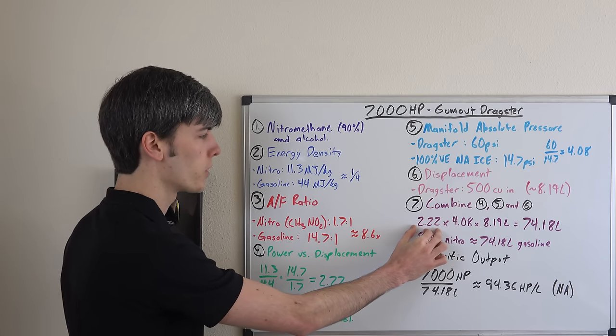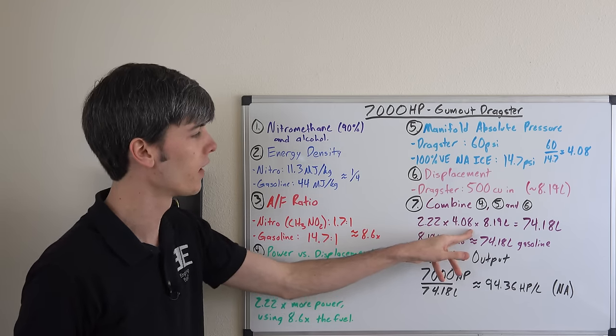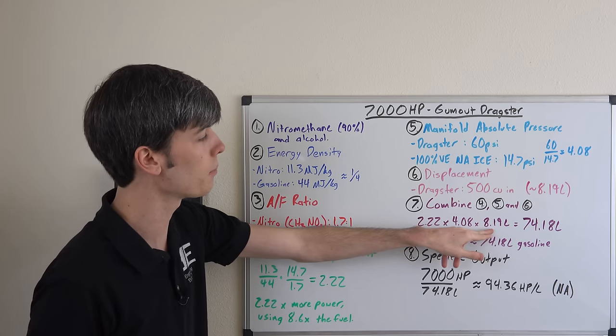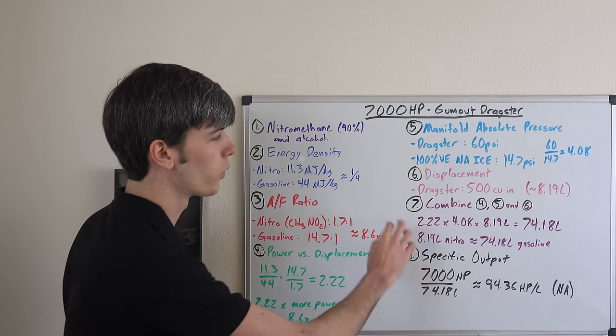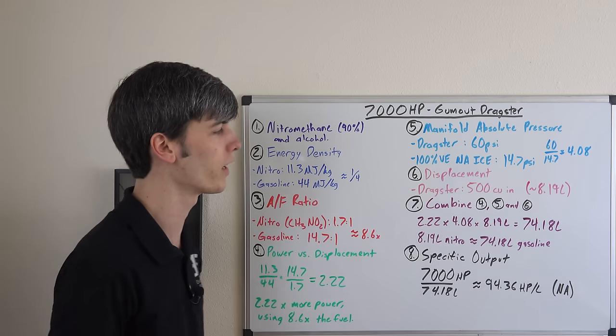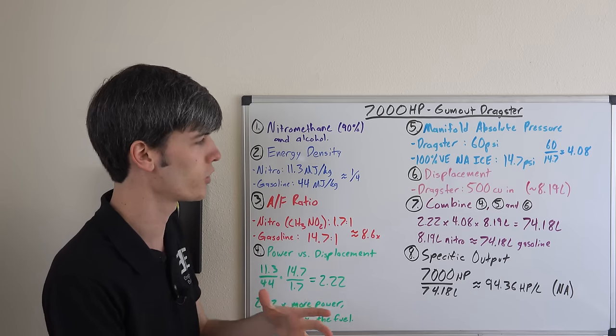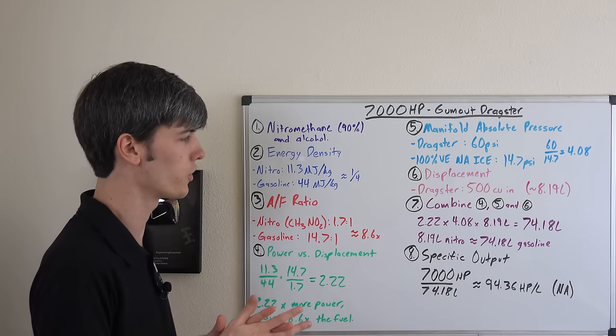We're producing 2.22 times the amount of power, we're burning 4.08 times the amount of air and this is in an 8.19 liter engine. So when we multiply all these together we get the equivalent of a 74.18 liter engine. This is a massive engine when you compare it to a naturally aspirated gasoline engine.